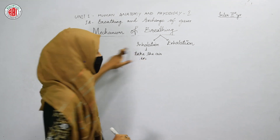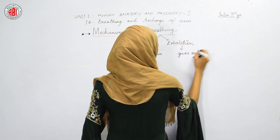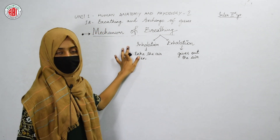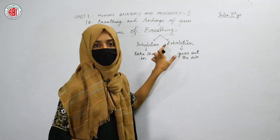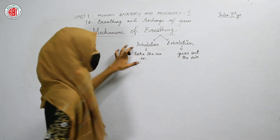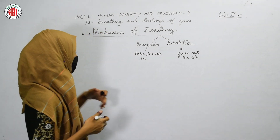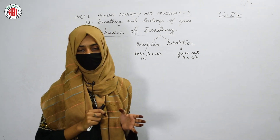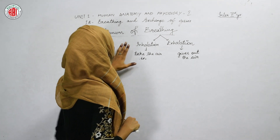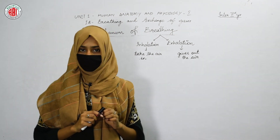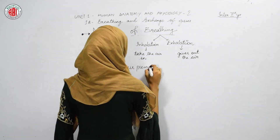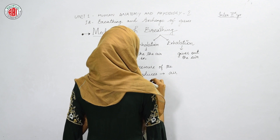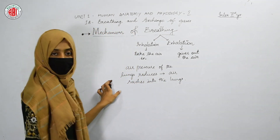We know that breathing involves two steps: inhalation and exhalation. Inhalation means taking air in — when air moves into the lungs, that process is called inhalation. Exhalation means giving the air out — removal of air is called exhalation. Inhalation can also be termed inspiration, and exhalation can also be called expiration. Now we will see the mechanism of inhalation — how the air gets into the lungs. It is due to some pressure difference, which we are going to explore.